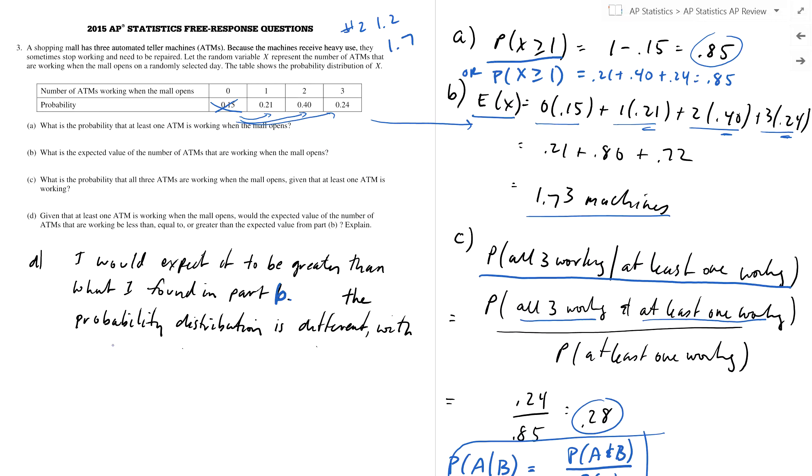So I'd expect it to be greater than what I found in part B. The probability distribution is different, with the probabilities for one, two, and three working ATMs increasing. Thus, the expected value will increase as well.